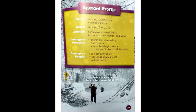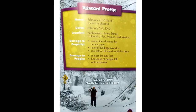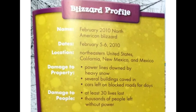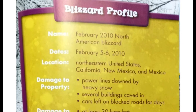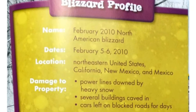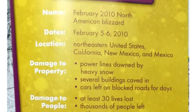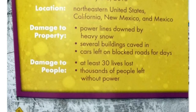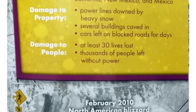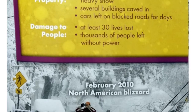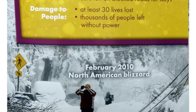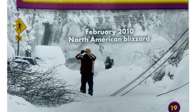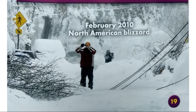Blizzard profile. Name: February 2010 North American Blizzard. Dates: February 5th and 6th, 2010. Location: Northeastern United States, California, New Mexico, and Mexico. Damage to property: Power lines down by heavy snow, several buildings caved in, cars left on blocked roads for days. Damage to people: At least 30 lives lost, thousands of people left without power.